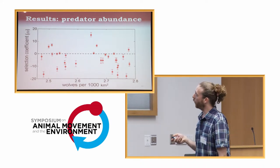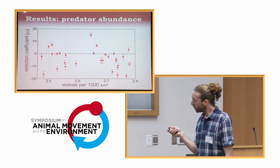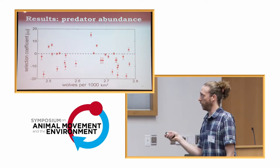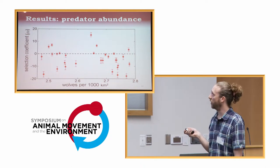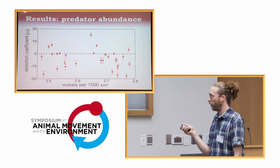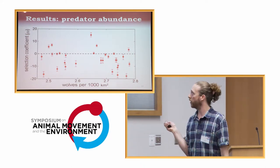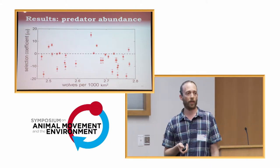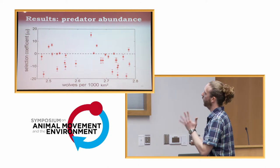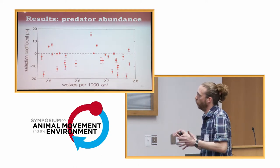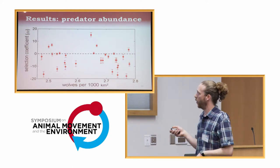Same idea for predator abundance. Here we have the average density of wolves for each one of those caribou ranges at x-axis. And again, we have maybe not such a strong pattern. But most of our individuals are actively avoiding densely populated areas that are densely populated by wolves.